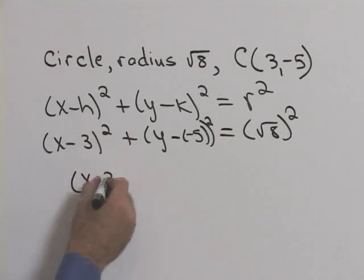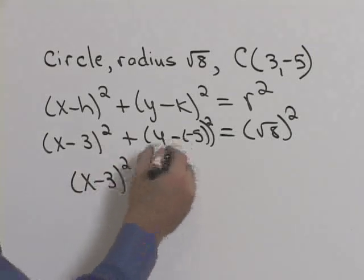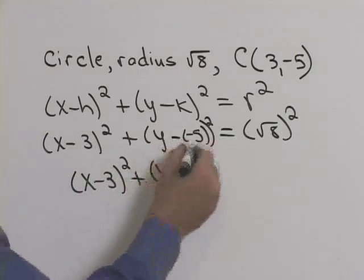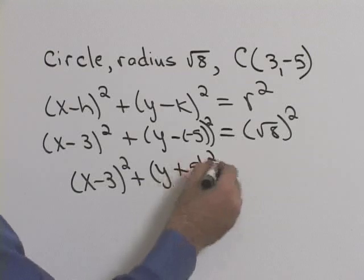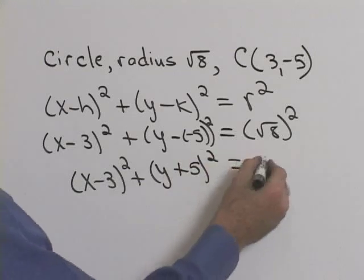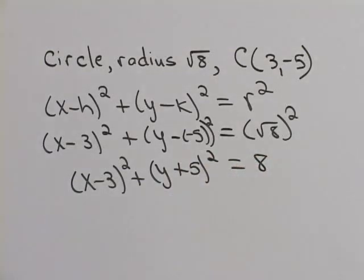So we're left with x minus 3 squared plus y plus 5 squared equals 8. This is the standard form of our circle.